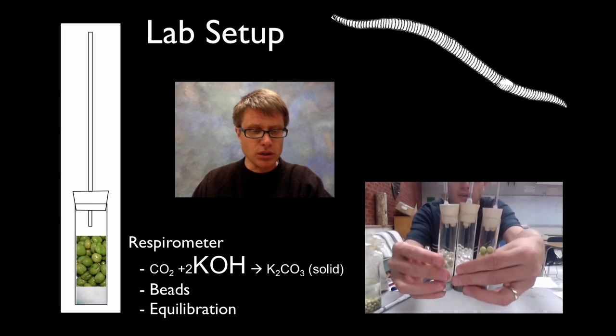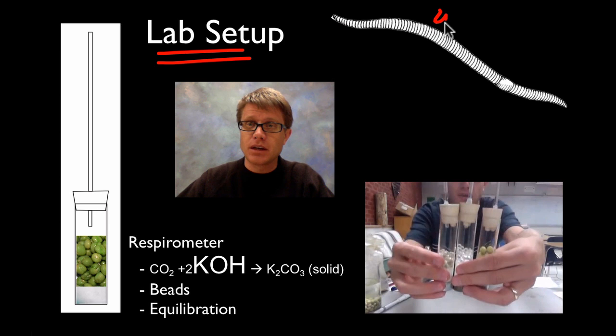But in this lab what we're really trying to do is measure the rate of respiration, the rate of cellular respiration. And we do that by measuring the rate at which oxygen is being consumed. And so in this lab setup we're going to use two different things. We're going to use worms, and then we're going to use peas.